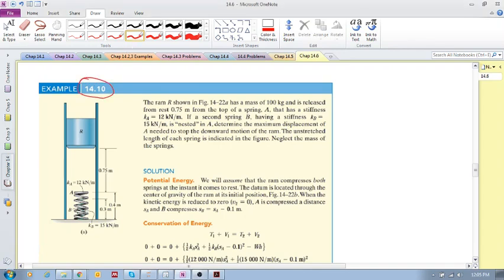Example 1410: we have a ram bar, a mass of 100 kilograms released from rest 0.75 meters from the top spring A. So we've got two springs.